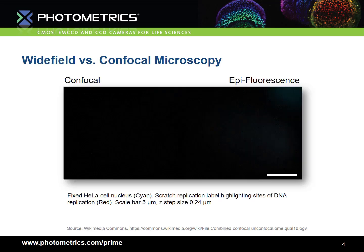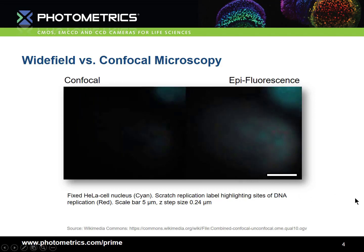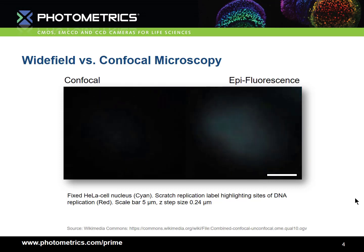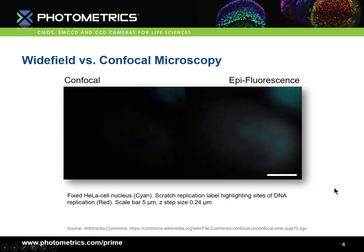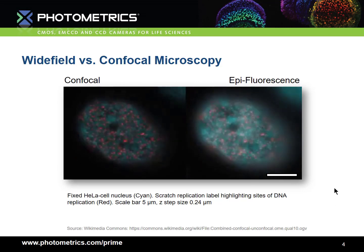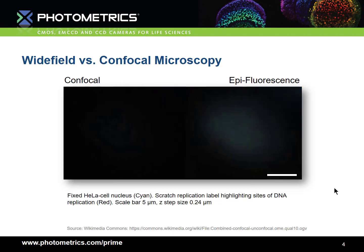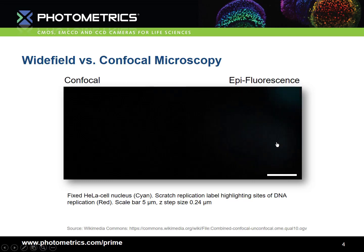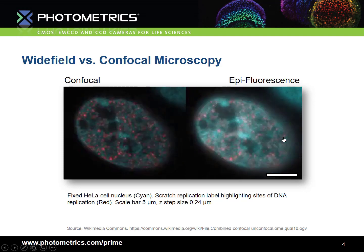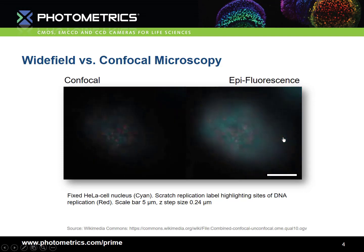The result of this improvement is that we can make three-dimensional cross-sections, such as this video here of HeLa cell nuclei. On the left we have the confocal image, and on the right we have the epifluorescence. You can see that the image contrast and clarity is much better for the confocal image, and that it's much easier to localise exactly where the red sparks, which indicate sites of DNA replication, are to be found.